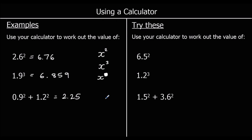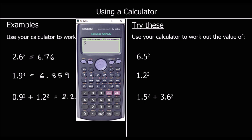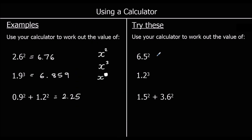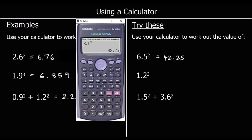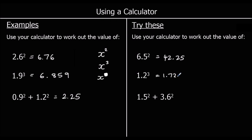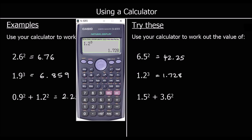Three of these for you to try. The first one: 6.5 squared, which as a decimal is 42.25. Then 1.2 cubed, which is 1.728. And 1.5 squared plus 3.6 squared, which is 15.21.